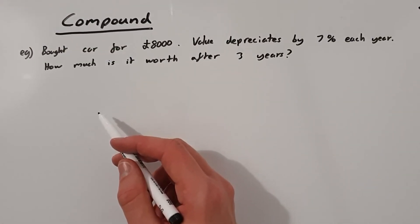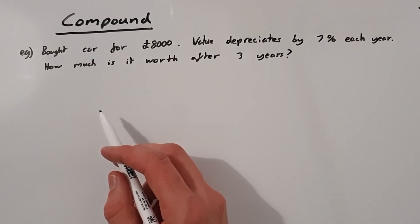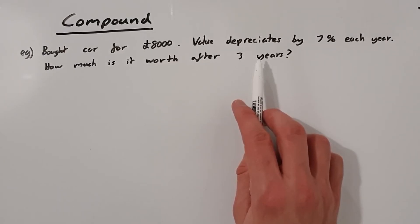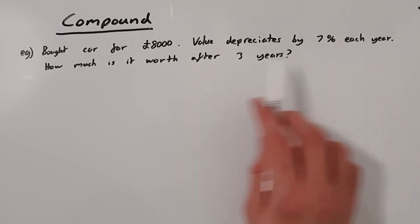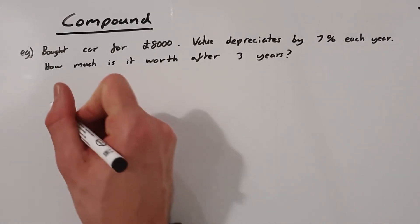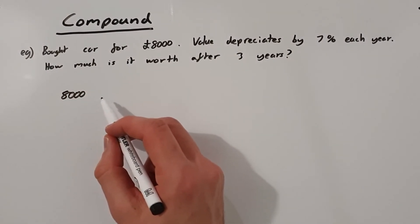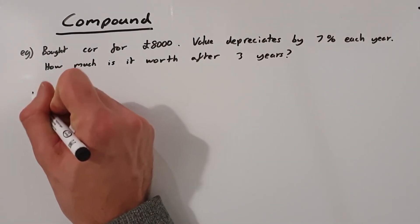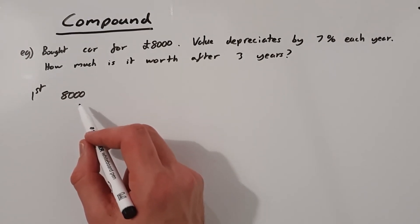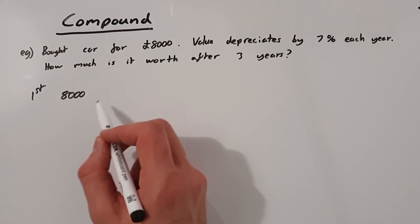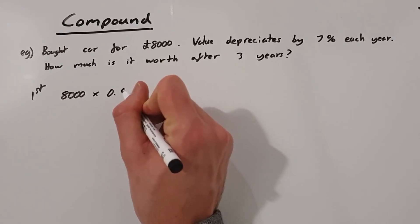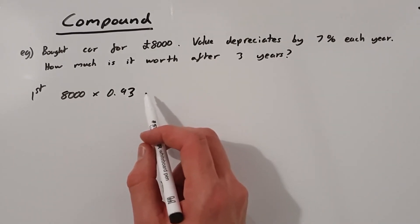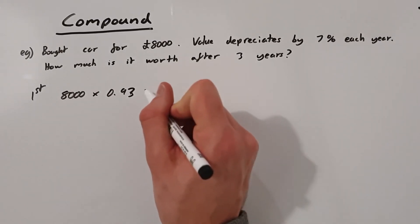Let's look at one more example of compound interest to really show what's happening year after year. Say we bought a car for £8,000 and the value depreciates — meaning it decreases — by 7% each year. How much is the car worth after three years? We start with £8,000. In the first year we take 7% off, so we multiply by 0.93, because 7% as a decimal is 0.07 and 1 minus 0.07 is 0.93. So 8,000 multiplied by 0.93 gives us £7,440 — the value of the car after one year.